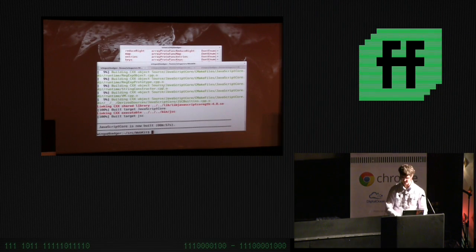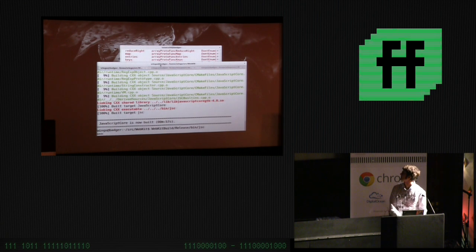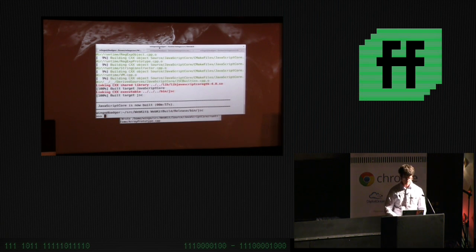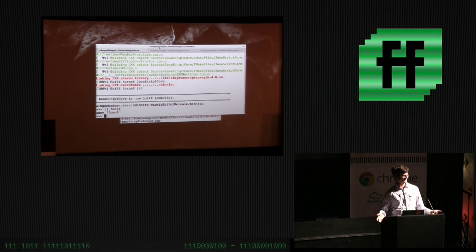JavaScript Core is now built. That's awesome. So WebKit build release bin JSC. Now I have a JavaScript Core in which I can say I got my array and I call foo on it and it says ahoy ffconf. Oh, isn't that so cool? You folks are really easy. I just made foo, right? Okay, next. Move on to something a little bit better.